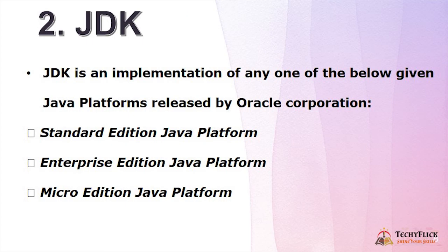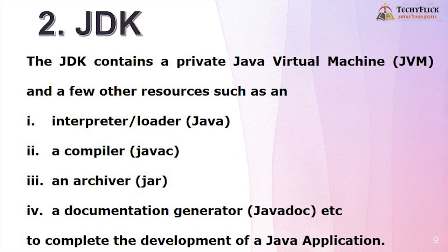JDK is an implementation of any one of the following Java platforms released by Oracle Corporation: Standard Edition Java Platform, Enterprise Edition Java Platform, and Micro Edition Java Platform. JDK contains a private Java Virtual Machine and resources such as an interpreter or loader, a compiler (Javac), an archiver (JAR), a documentation generator (Javadoc), etc., to complete the development of a Java application.